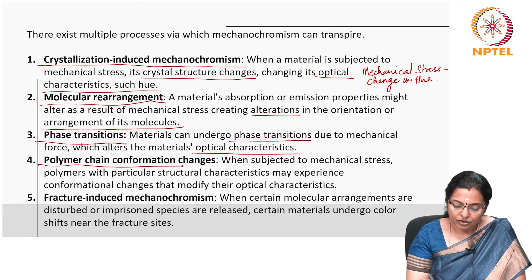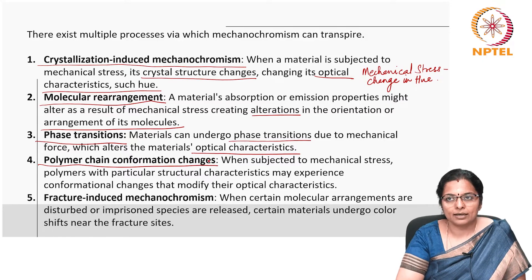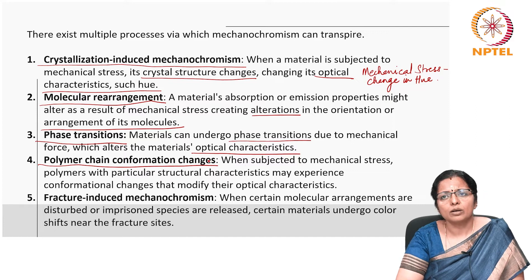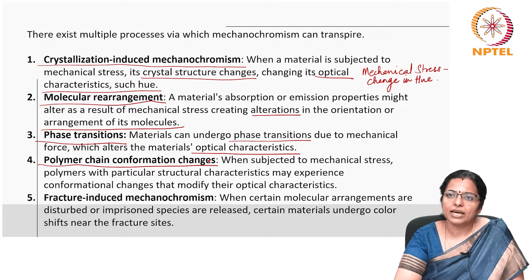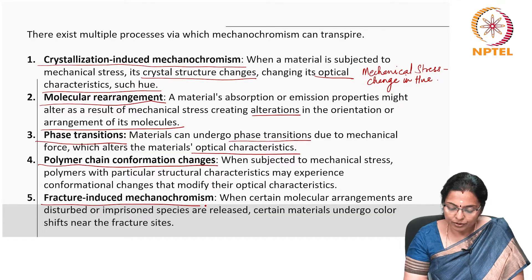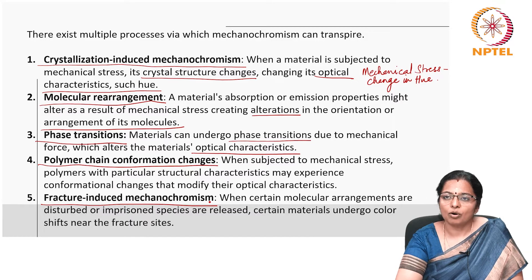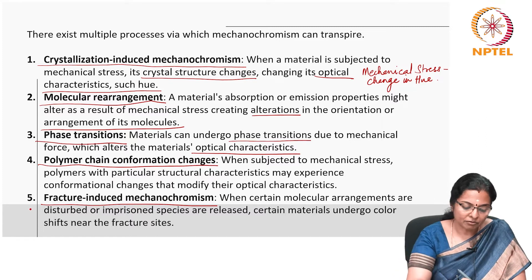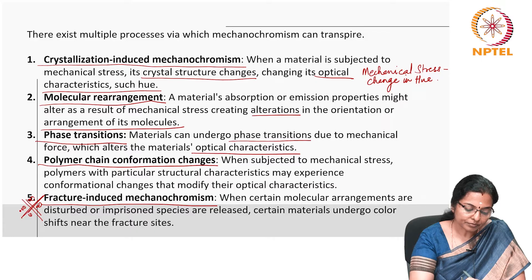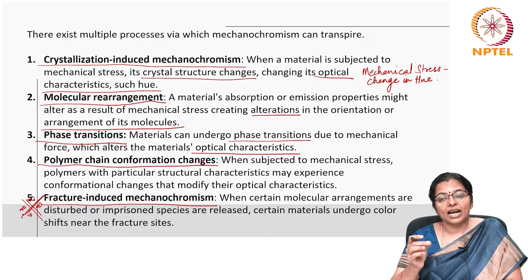The fourth process is polymer chain conformation changes. When subjected to mechanical stress, polymers with particular structural characteristics may experience conformational changes that modify their optical characteristics. The fifth is fracture-induced mechanochromism: when certain molecular arrangements are disturbed or imprisoned species are released, certain materials undergo color shifts near the fracture sites. This is a very important and crucial property which could be used in identifying cracks in structures.